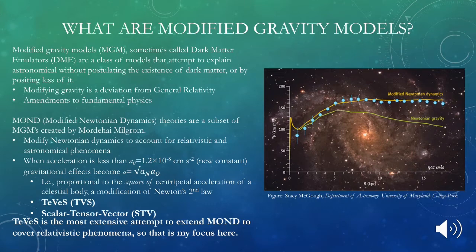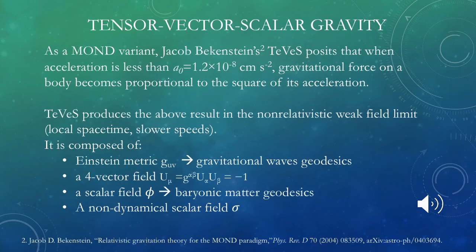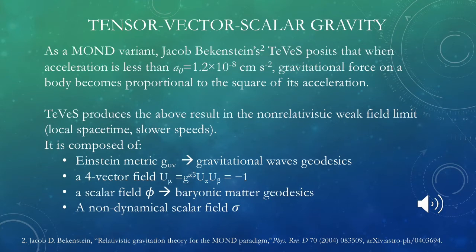Tensor vector scalar gravity, or TeVeS, as a MOND variant, postulates a certain gravitational effect when acceleration reaches a low point, and the gravitational force becomes proportional to the square of its centripetal acceleration. The tenets of TeVeS produce this result in a non-relativistic weak field. It postulates an Einstein metric, a four-vector field, a scalar field where baryonic matter propagates, and a non-dynamical scalar field — giving us two different geodesics: one for gravitational waves and one for baryonic matter.